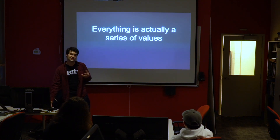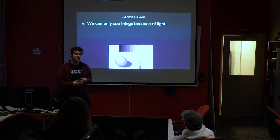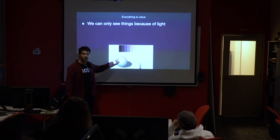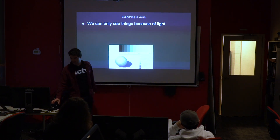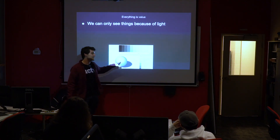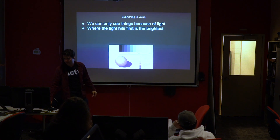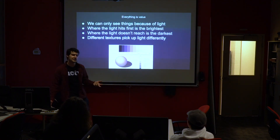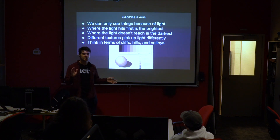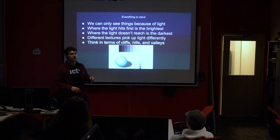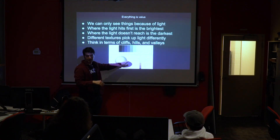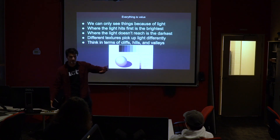Even more crazily, everything is really just a series of values. We only see things because light hits objects — there's no line here, it's really just a gradation of values. It's the contrast between this gray and this white that makes you see the object. Wherever light hits first on an object is going to be the brightest spot; wherever light doesn't hit is going to be the darkest, and different textures pick up light differently. I like to think of shading in terms of cliffs, hills, and valleys: a cliff is where light hits one side and not another; a hill is a slow gradation; a valley is a similar texture all the way through.